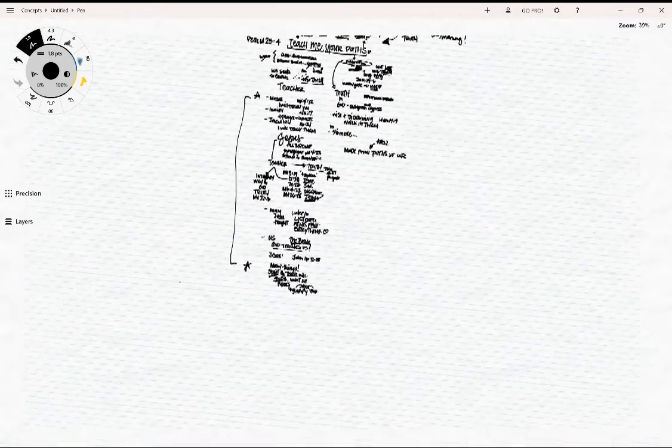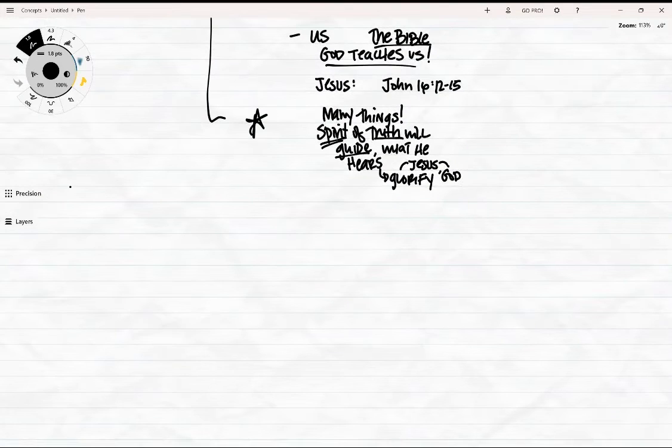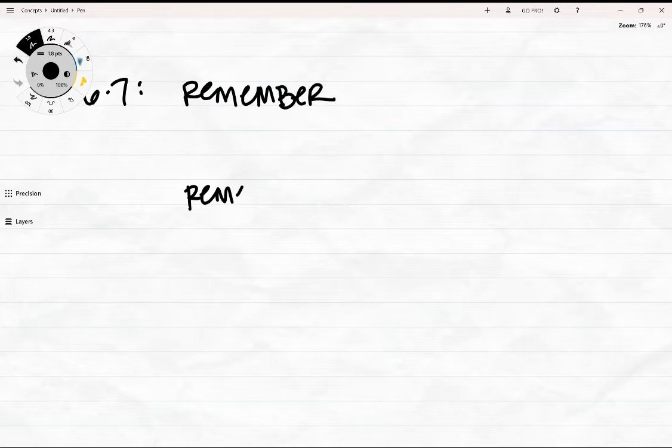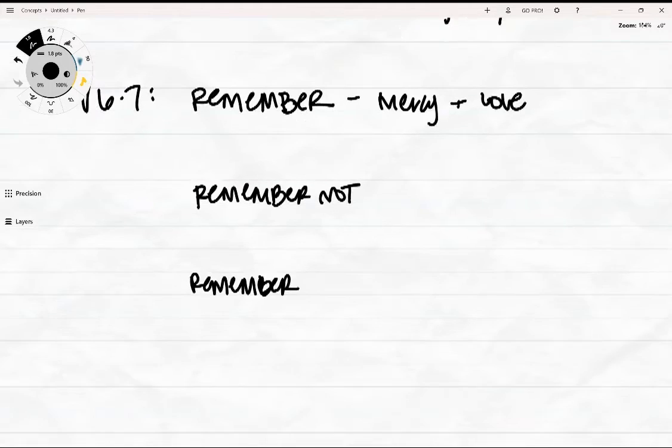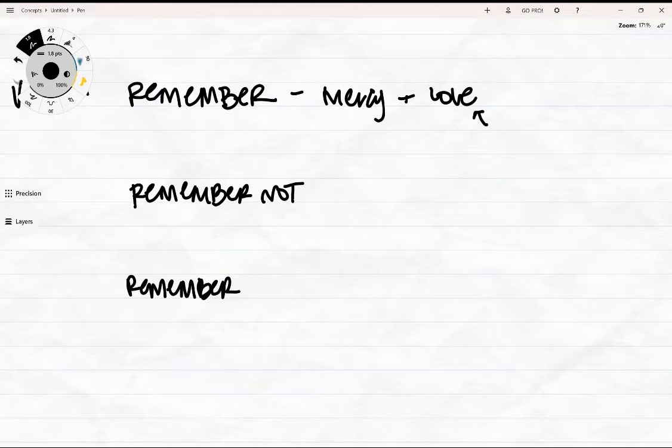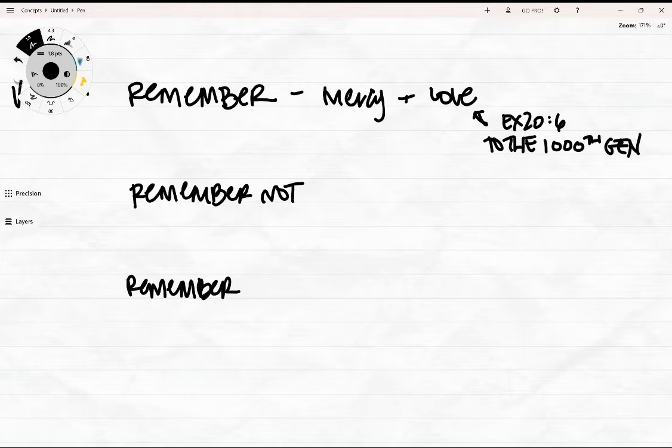Verse 6 and 7. Remember your mercy, O Lord, and your steadfast love, for they have been from old. Remember not the sins of my youth or my transgressions. According to your steadfast love, remember me for the sake of your goodness, O Lord. If we look at that again, it says remember, and then remember not, and then remember again. So we ask God to remember his mercy and his steadfast love. We know of them from old. Even when he is giving the Ten Commandments, after stating the second one, he goes on to warn them against making idols and hating him. But then he says, by showing steadfast love to thousands or to the thousandth generation of those who love me and keep my commandments. Exodus 26.